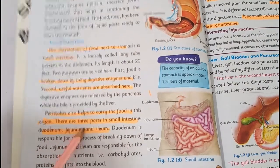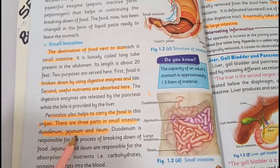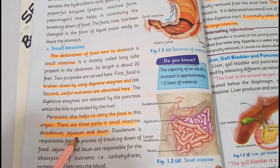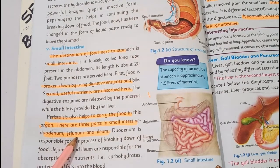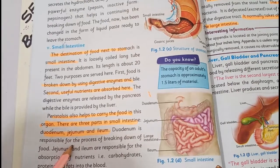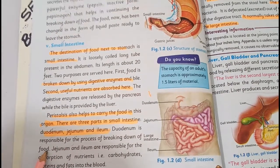There are three parts in small intestine: duodenum, jejunum and ileum. The small intestine is divided into these three parts. The duodenum is responsible for the process of breaking down of food.